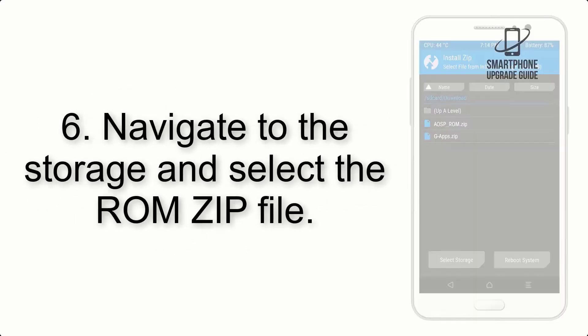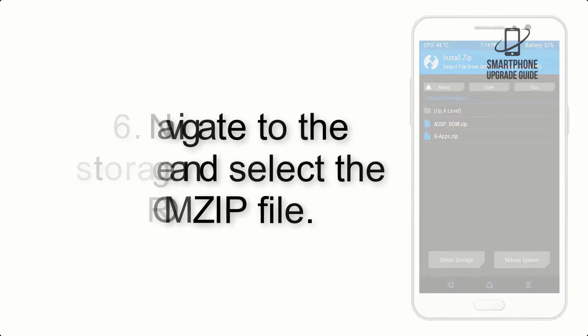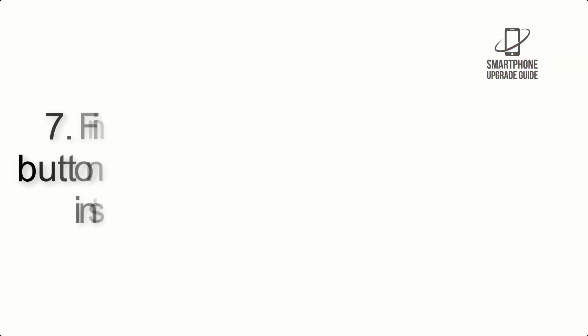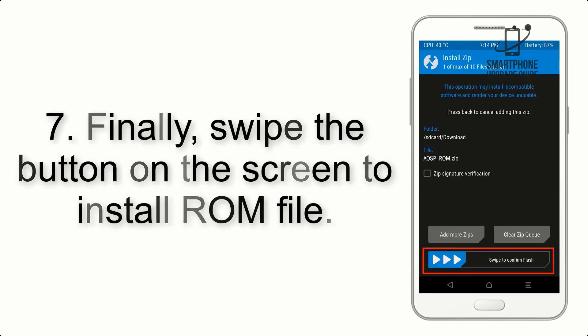Step 6: Navigate to the storage and select the ROM zip file. Step 7: Finally, swipe the button on the screen to install the ROM file.